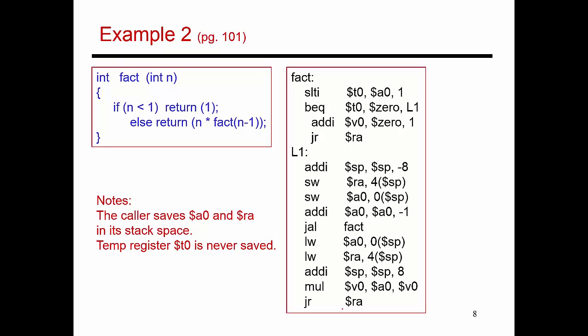Now let's move to this second example over here. And this is a much more complicated example because this is a recursive procedure call. So I'm trying to compute the factorial of a number n. And so I do this recursively.